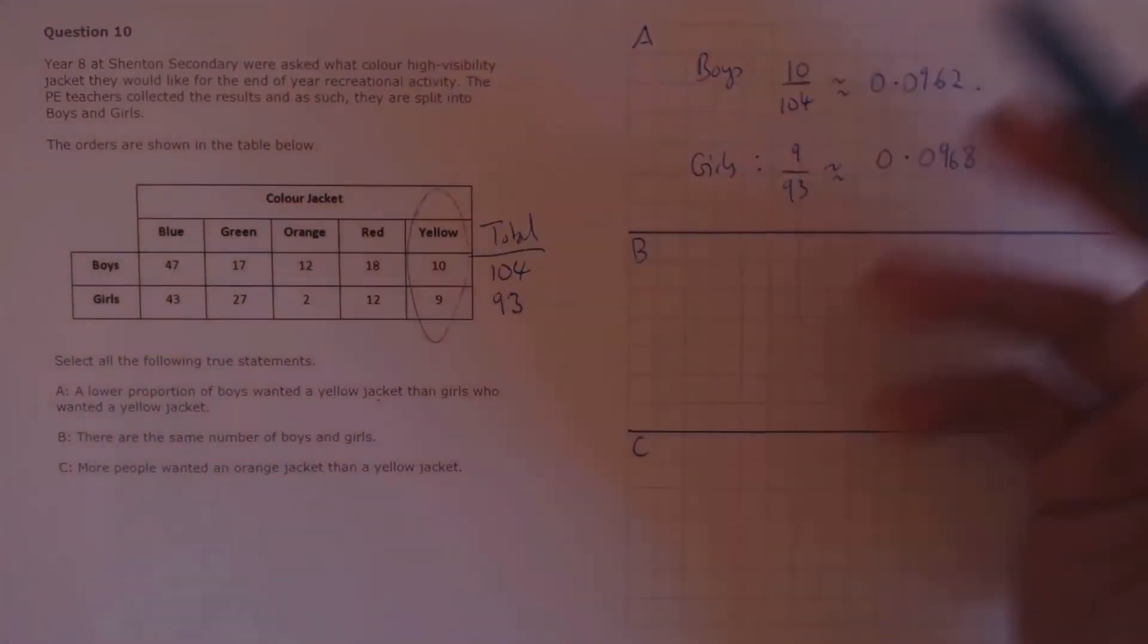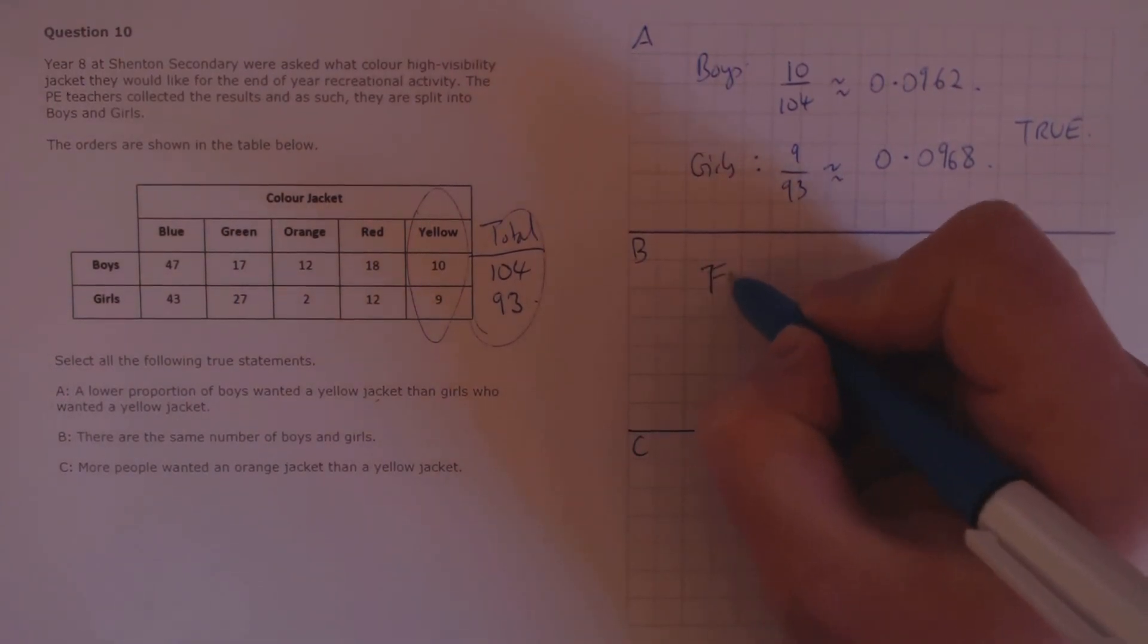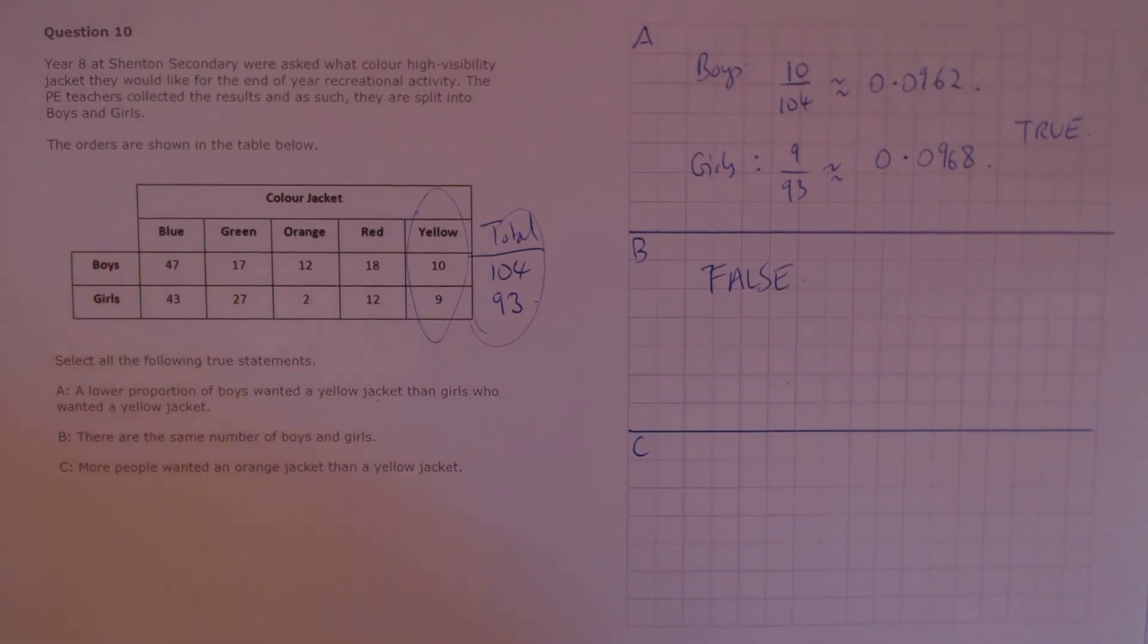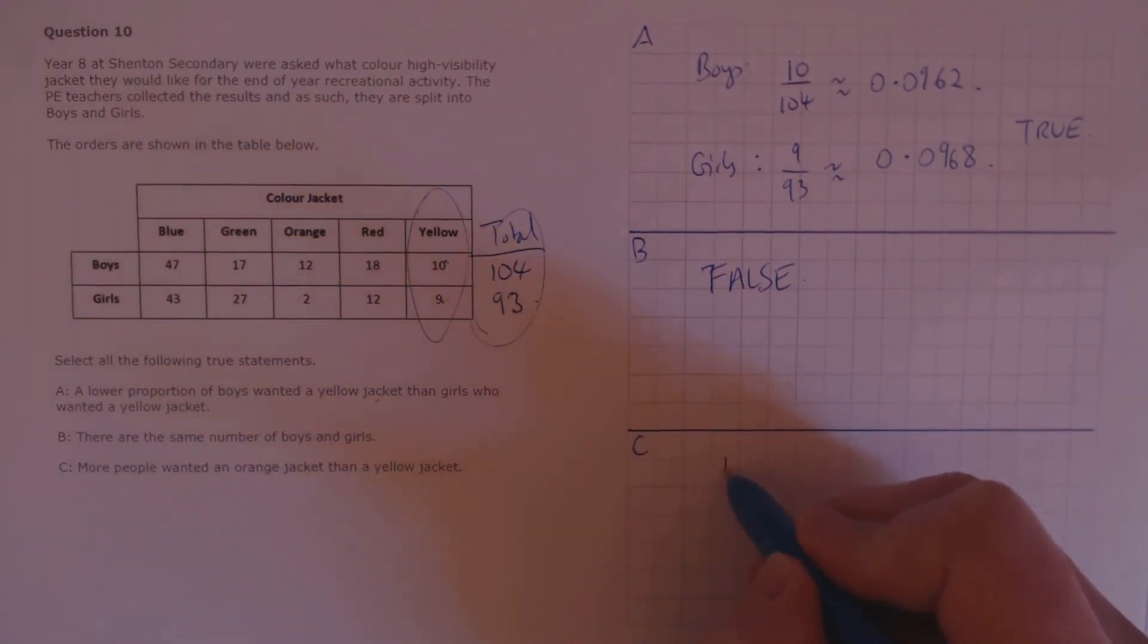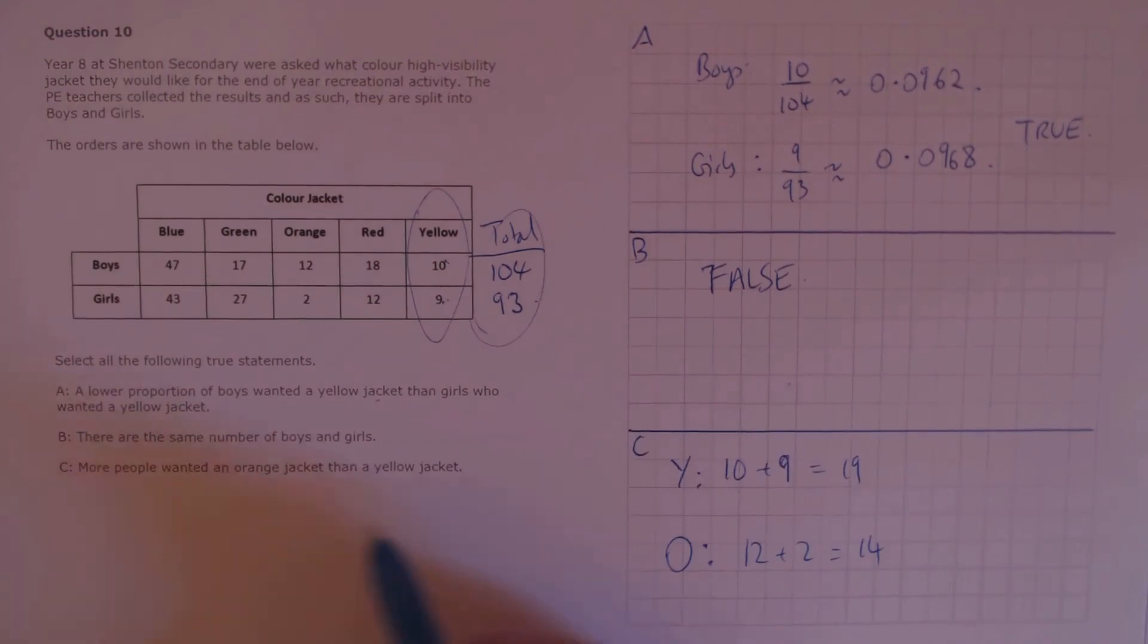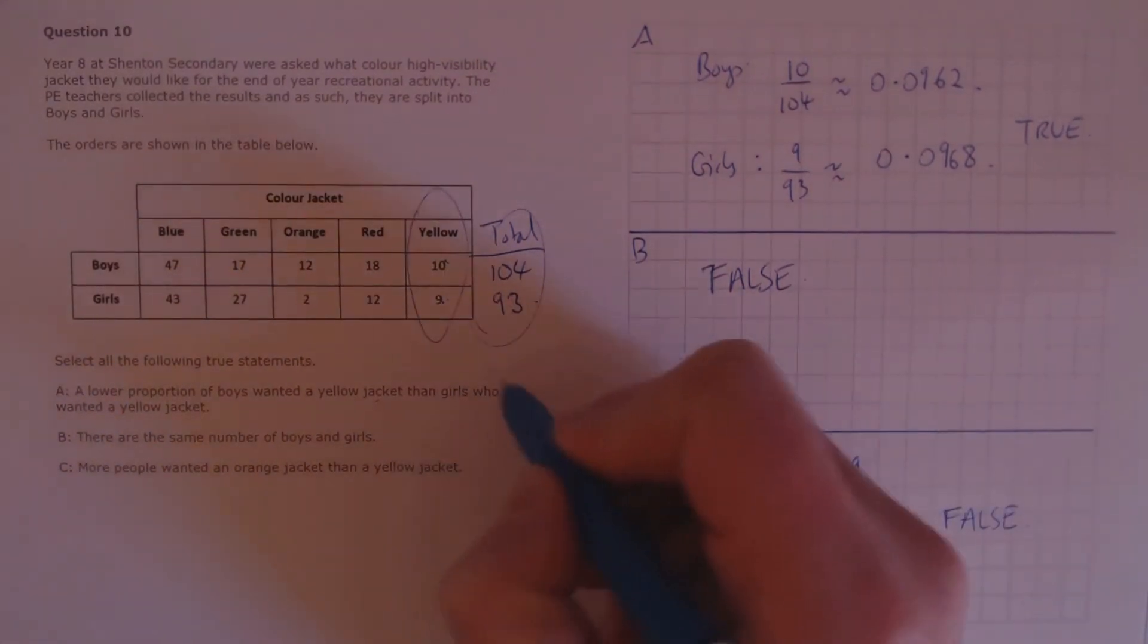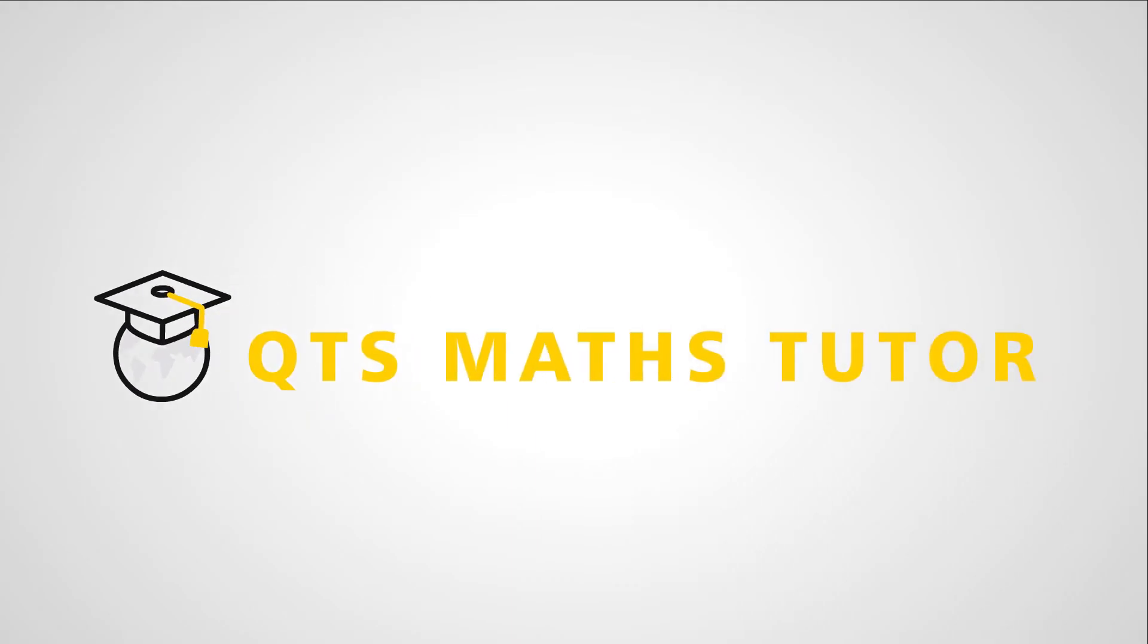They are the same number of boys and girls. We already calculated this before here, and that's not true. False. More people wanted an orange jacket than a yellow jacket. So the total number of people who wanted a yellow jacket, that's 10 plus 9, is 19. And orange, that's 12 plus 2, is 14. So that is false. Our final answer, true, false, and false.